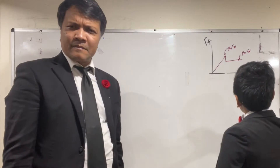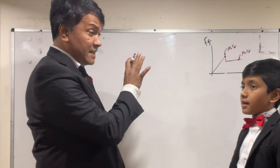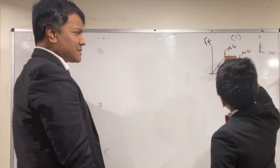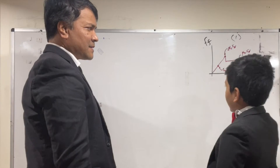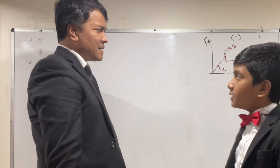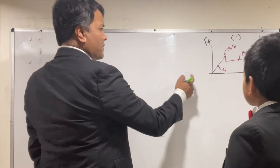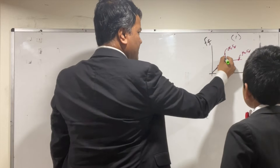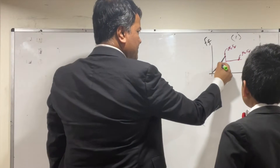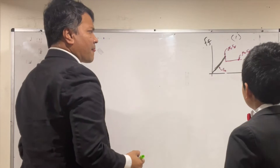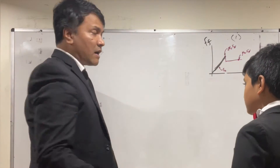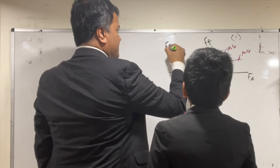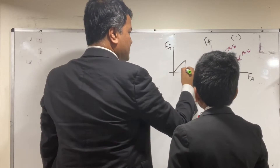Don't worry if you don't understand this yet — this is just graph number one. Any point on this diagonal is equal to fa. So any point on this diagonal black line is equal to fa, and ff. fa and ff are equal on that portion of the graph.